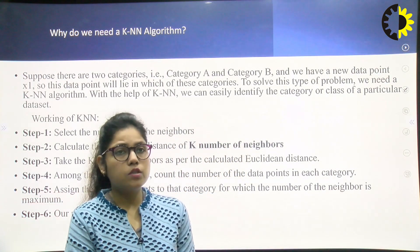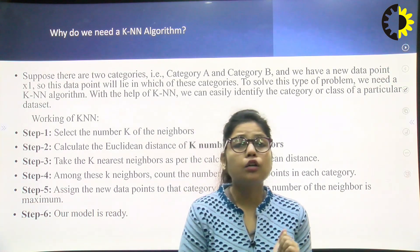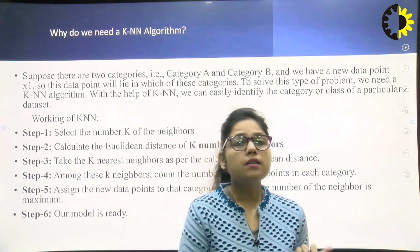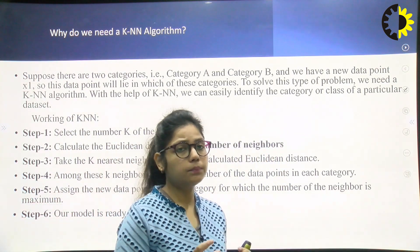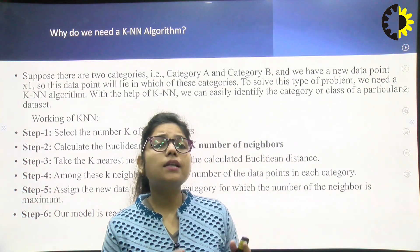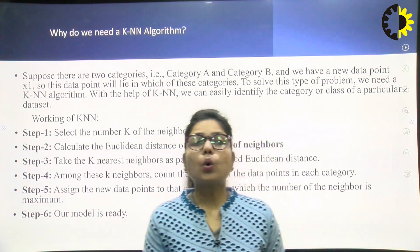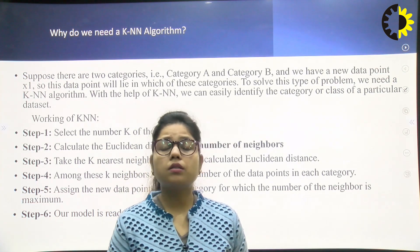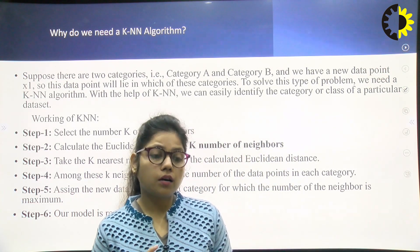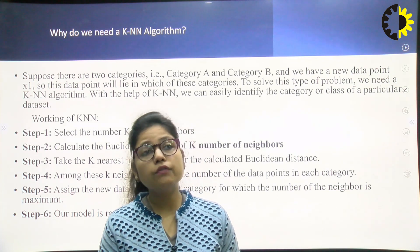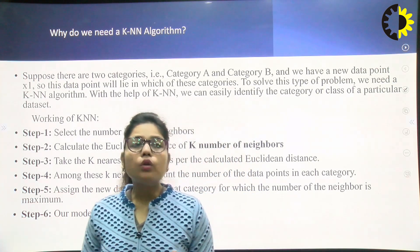Why do we need KNN algorithm? Suppose there are two categories, category A and category B, and we have a new data point X1. This data will lie in one of these categories. To solve this problem, we need KNN. With KNN, we can easily identify the category or class of a particular dataset. Category A and category B are clusters — in a cluster, all data items have similar properties. We try to match the properties of new data point X1 from category A or B, and if it satisfies the conditions, it is placed in that category.